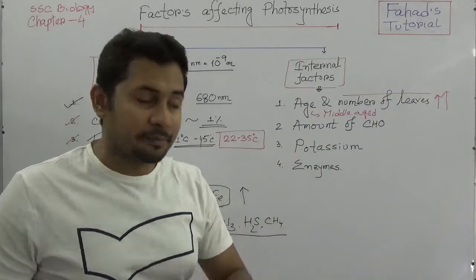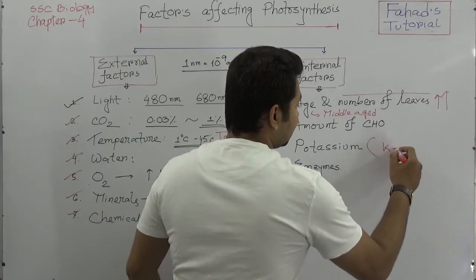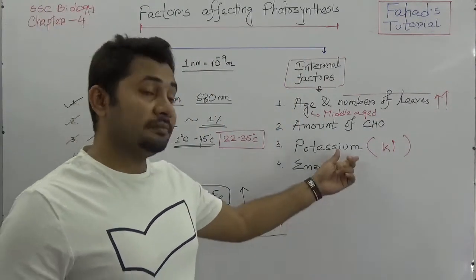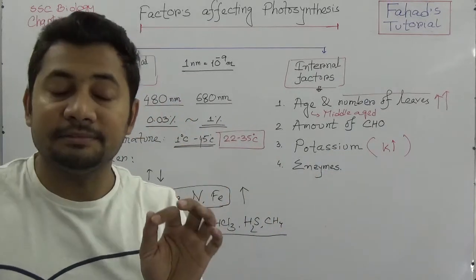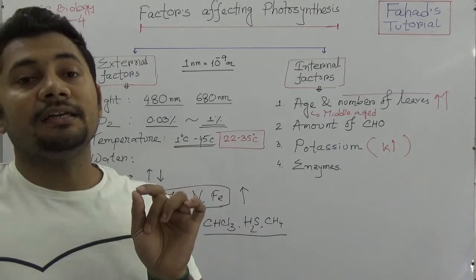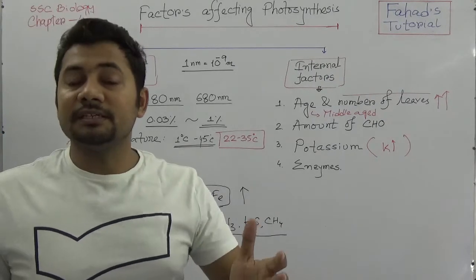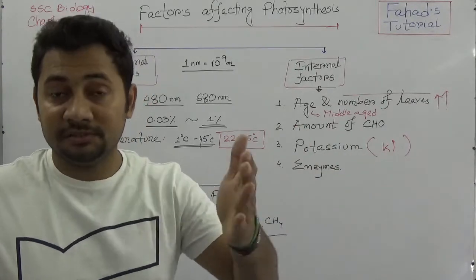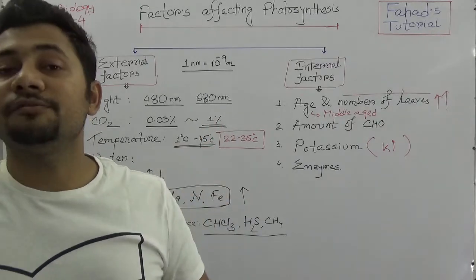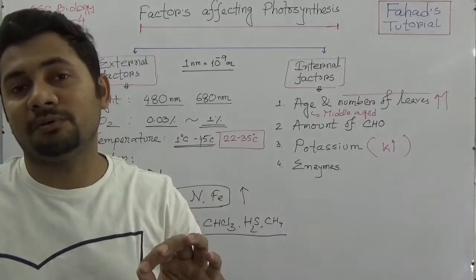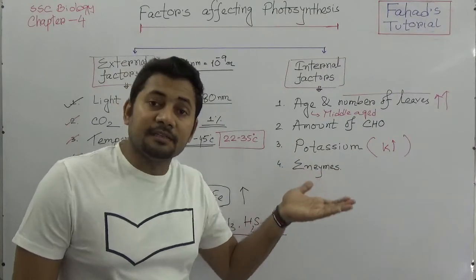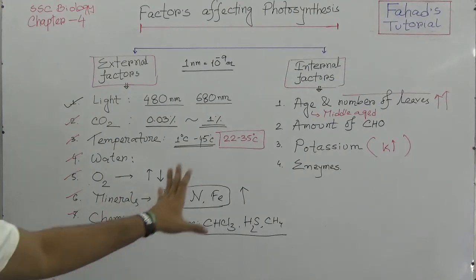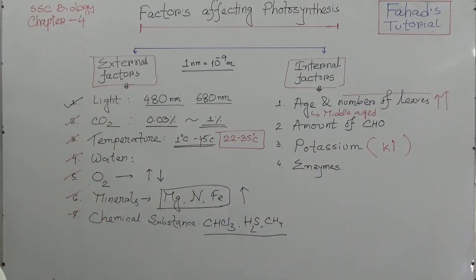Potassium is a very important internal factor — more potassium leads to a higher rate of photosynthesis. Enzymes are also a very important internal factor in photosynthesis. In both the C3 cycle and the C4 cycle, a large number of enzymes are required. When more enzymes are available, the rate of photosynthesis is higher.